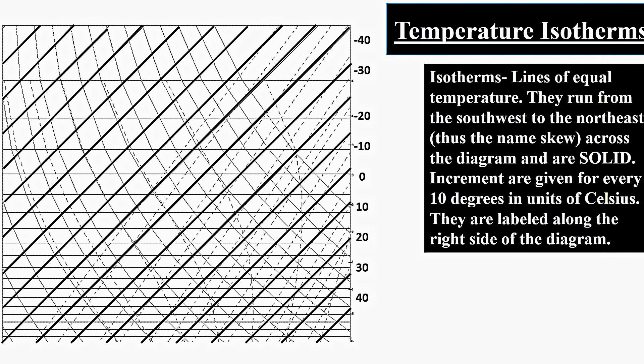Increments for temperature are given every 10 degrees Celsius, and they are labeled along the right side of the diagram.